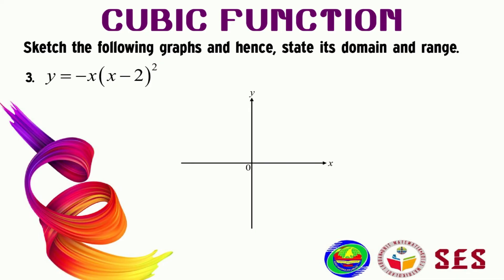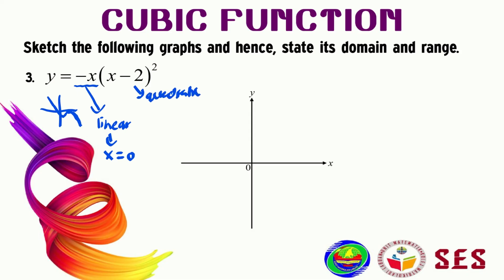Question three: y = −x(x − 2)². When we expand this, x² multiplied by −x gives −x³, which changes the shape of the graph. The linear part, −x, passes through at x = 0, and the quadratic part (x − 2)² turns at x = 2. So we have x = 0 here and x = 2 here, and the graph must only cut the x-axis at two points.